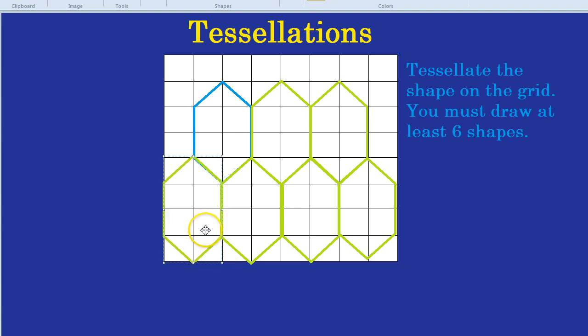That's the one mistake I see most often with tessellation. A student will draw enough shapes so that there's six in total, rather than drawing six themselves. So watch out for that mistake.